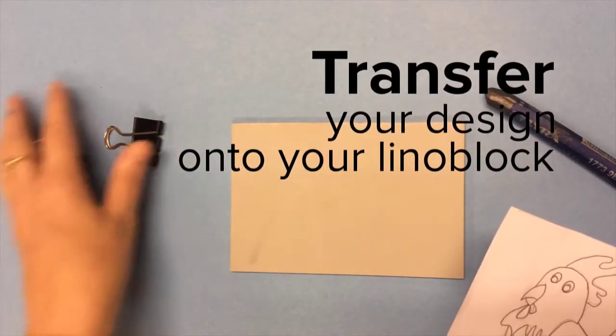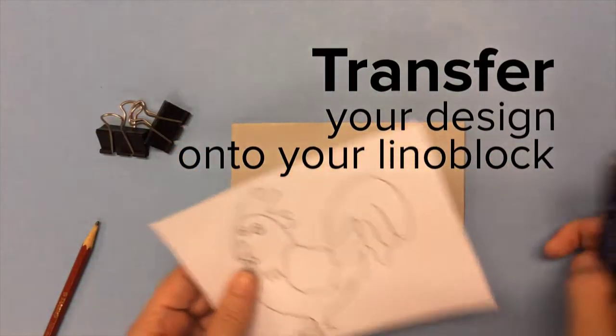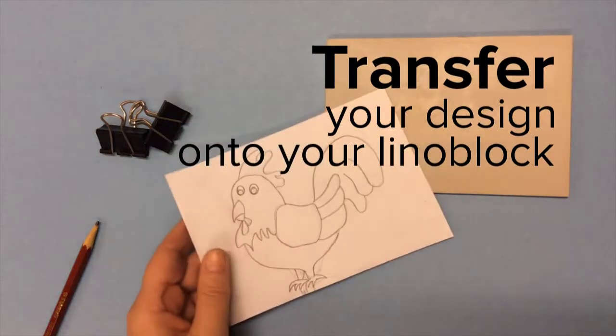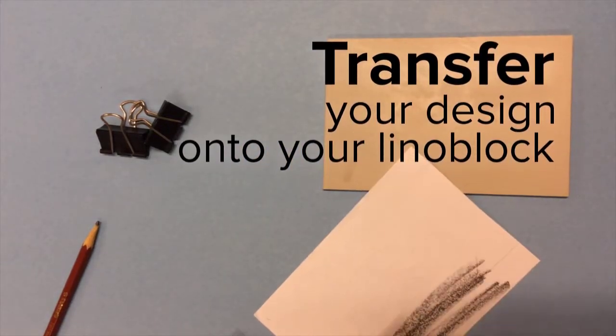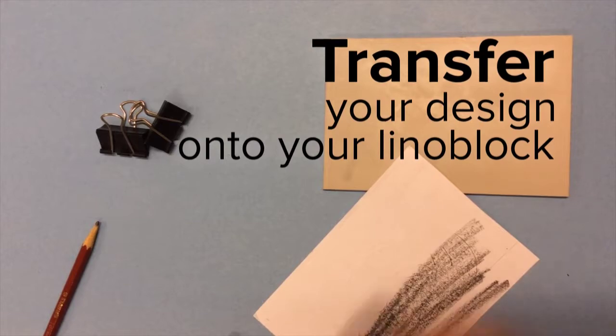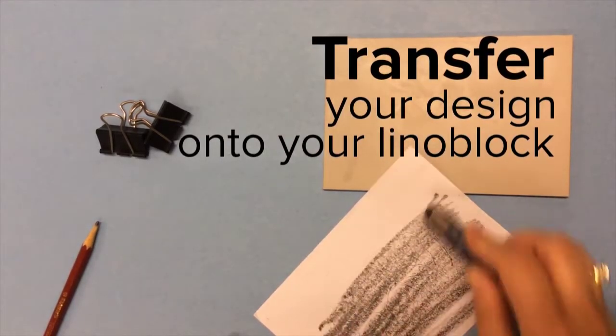So now you have your drawing and we need to transfer it to your lino block. We're going to use some clips and a graphite stick. All you have to do is turn over your paper and color the back. Be sure to color the back. Every year somebody colors the front and then complains that they can't see their drawing.